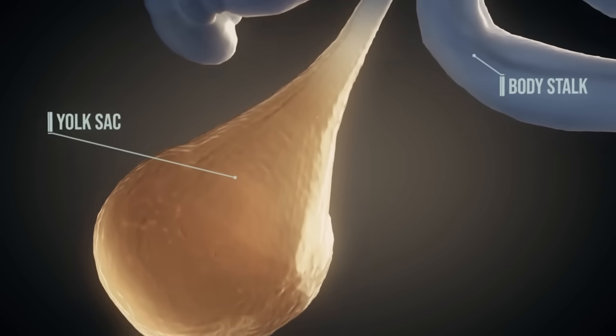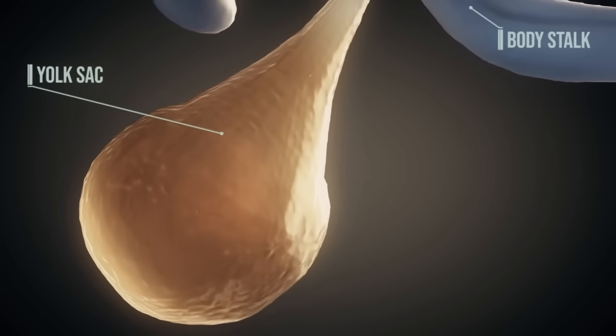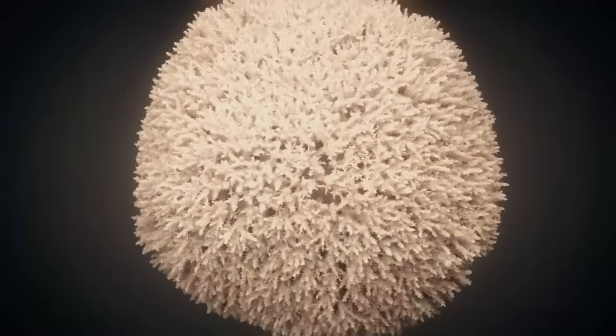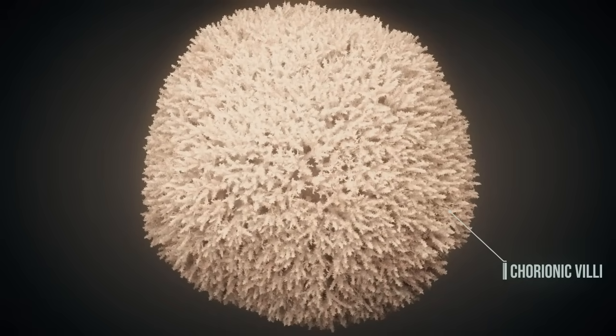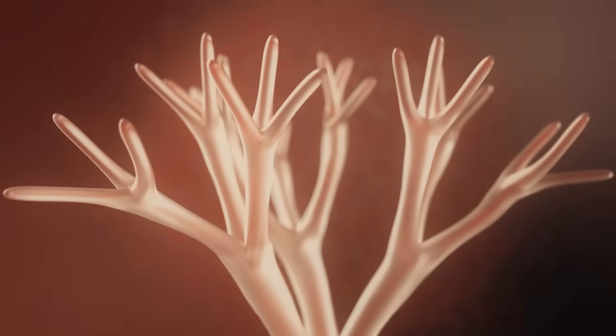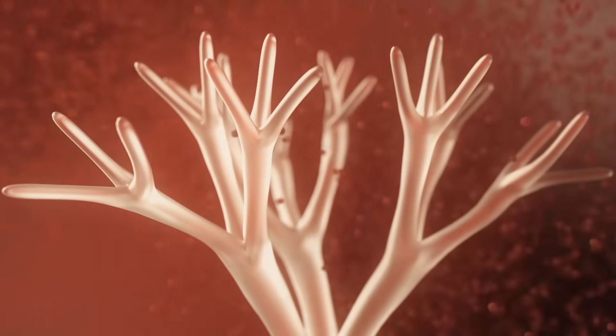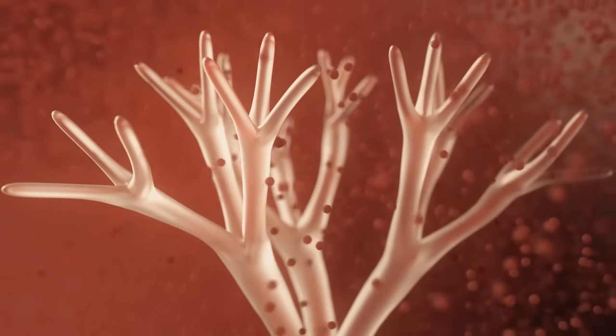The yolk sac and the body stalk continue to nourish the embryo. The chorion is the outer membrane and is connected to the body stalk. The chorionic villi are surrounded by maternal blood. This allows them to carry nutrients to the embryo and nourish it.